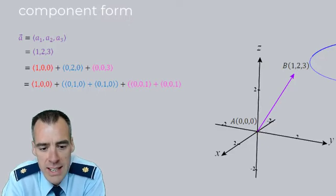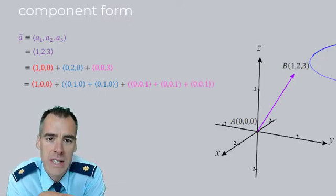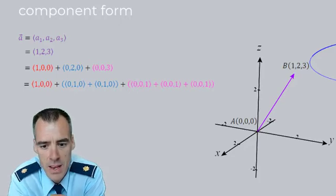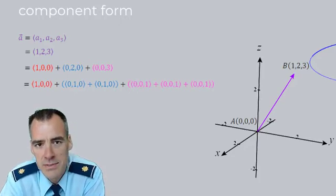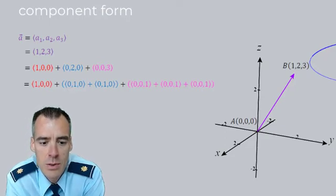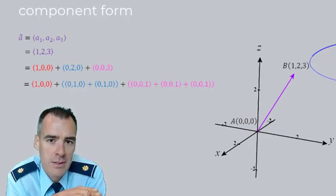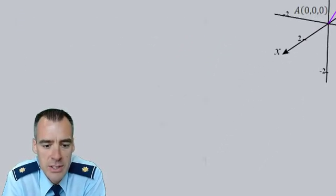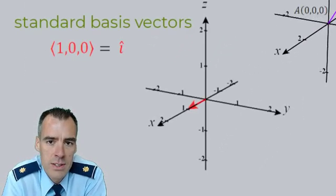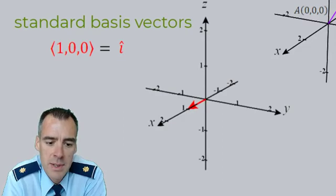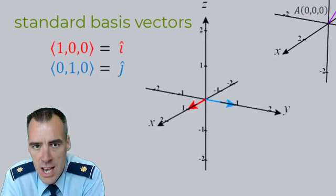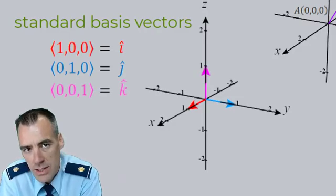And what we actually just did in this final step is we can decompose this vector into its standard basis vectors. So it turns out each of these vectors that we finally decompose it to is so helpful and so widely used that it's got its own nomenclature. So that (1, 0, 0) vector, that's going to be i-hat. That (0, 1, 0) vector is our j-hat, and that (0, 0, 1) vector is our k-hat.